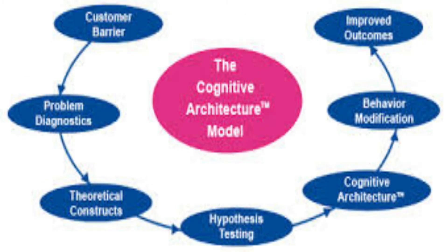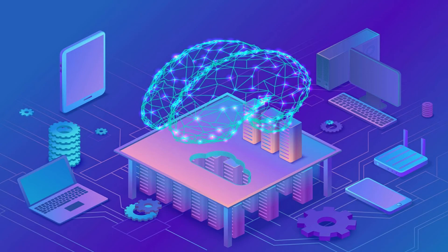Successful cognitive architectures include Adaptive Control of Thought, Rational, and SOAR. Human cognitive architectures provide a generic framework of the information processing stages that learners use to encode, store, and modify information.